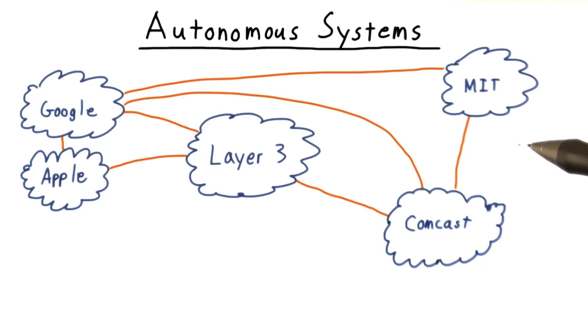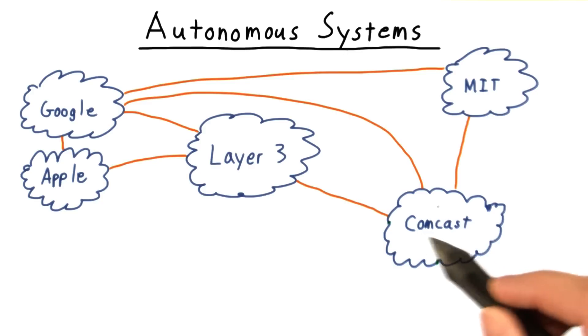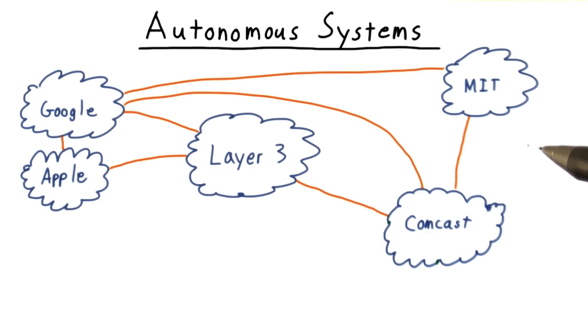Each of these autonomous systems is responsible for routing traffic within itself. This is called intra-domain routing. As you might imagine, there are some interesting algorithmic problems here that have a shortest path-like character. You can explore this further by taking a networking class or consulting the links in the instructor notes.